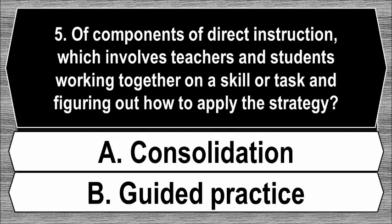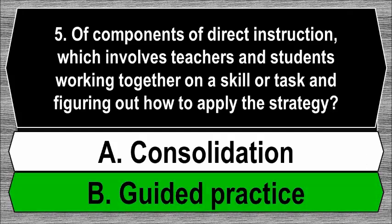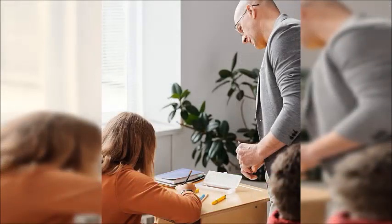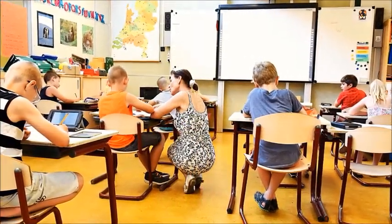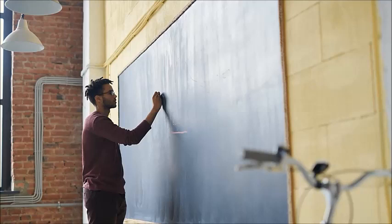Question 5. A component of direct instruction which involves teachers and students working together on a skill or task and figuring out how to apply the strategy. A. Consolidation. B. Guided practice. The best answer is B, guided practice. During guided practice, the student practices the target skill or strategy with the assistance of the teacher, thus working together. On the other hand, consolidation is a lesson stage where new material is reviewed and learning is reinforced, normally occurring at the end of the lesson.